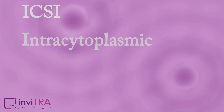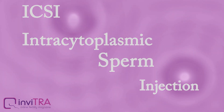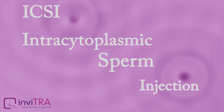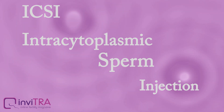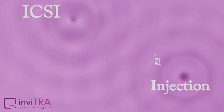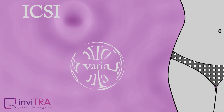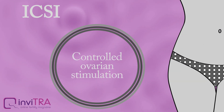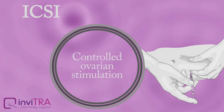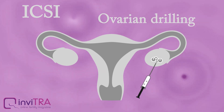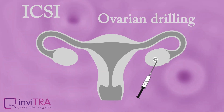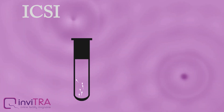Intracytoplasmic sperm injection is one of the most common assisted reproductive technologies. It is very similar to conventional in vitro fertilization, but the difference is the way through which eggs are fertilized, as it is used when the sperm have problems to penetrate the oocyte by themselves. Once ovarian stimulation is performed, follicular puncture is carried out and the eggs are removed when they are mature.